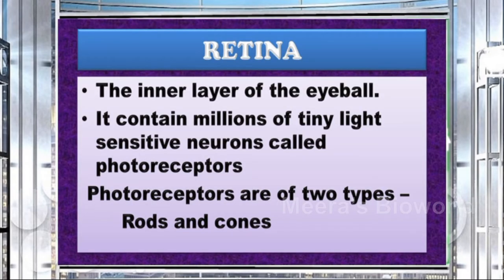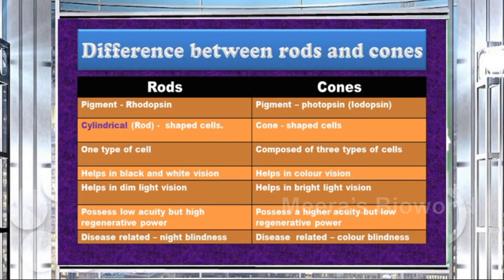The retina, the inner layer of the eyeball, contains millions of tiny light-sensitive neurons called photoreceptors. Photoreceptors are of two types: rods and cones. Rods are rod-shaped (cylindrical) and contain a pigment called rhodopsin, whereas cone cells are conical in shape and contain another pigment called iodopsin or photopsin. In rods, only one type of cell is seen, whereas in cones, based on primary colors, there are three types of cells.